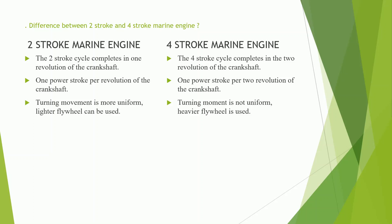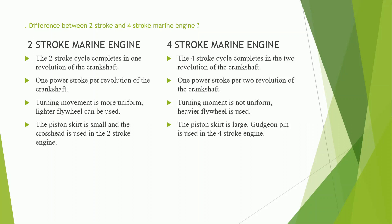The 4th difference: in 2 stroke engines, the piston skirt is small and a crosshead is used to transfer the side thrust generated during running of the engine. Whereas in 4 stroke engines, the piston skirt is large and a gudgeon pin is used; there is no crosshead present, so the piston skirt itself is used to transfer the side thrust generated.